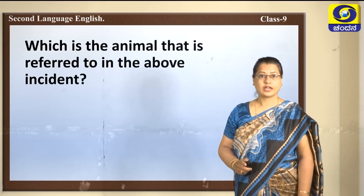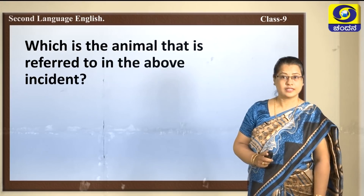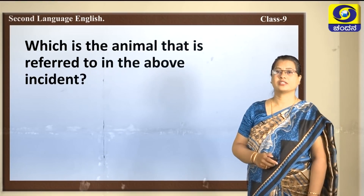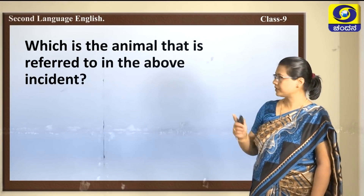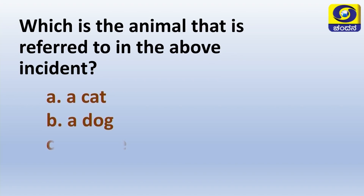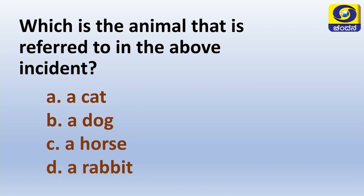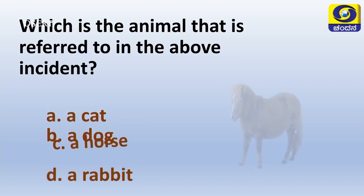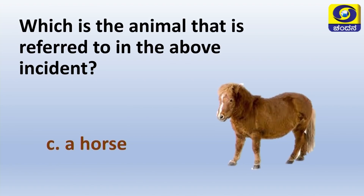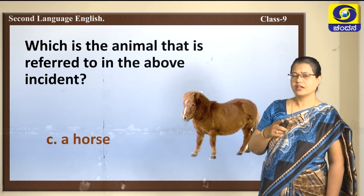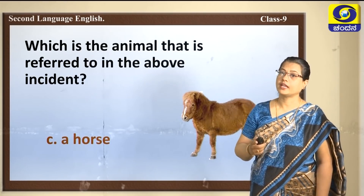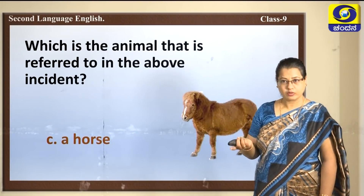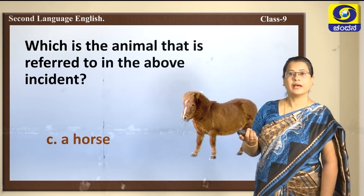Now let us see the question: which is the animal referred to in the above incident? Options: A. Cat, B. A dog, C. A horse, D. A rabbit. Correct, it is a horse. You might be wondering that I never used the word horse — I used the word pony. Pony is the young one of the horse, just as pup is the young one of the dog, kitten is the young one of the cat, and bunny is the young one of the rabbit.